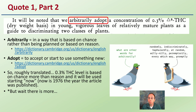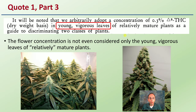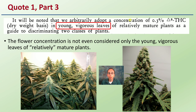But there's even more to this as we continue to investigate further. The article states: 'We arbitrarily adopt 0.3% delta-9 THC concentration on a dry basis in young, vigorous leaves.' So the flower concentration was not even considered — only the young, vigorous leaves of relatively mature plants.